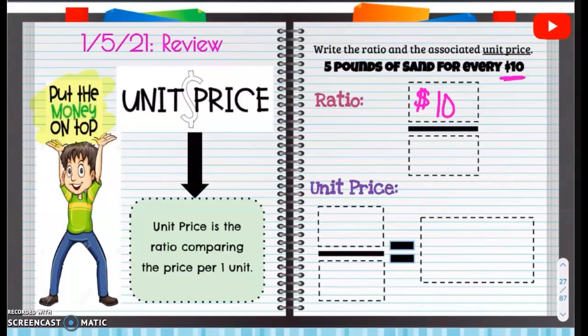And then our unit is going to be five pounds of sand. So I'm going to put five pounds. You can add 'of sand' if you'd like, or you can just put five pounds. That's fine. All right, so now we have $10 for five pounds of sand.